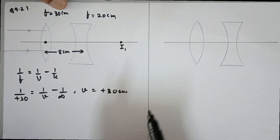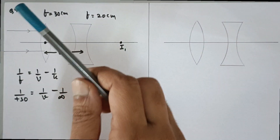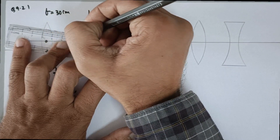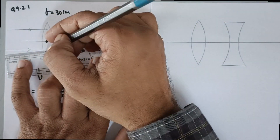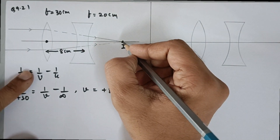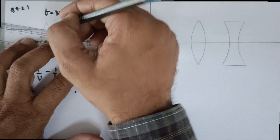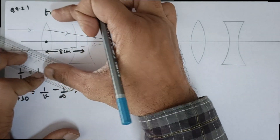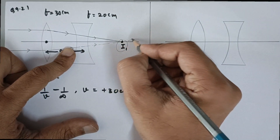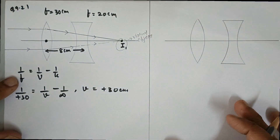This is the first image I1. This image is now going to behave as the object for the concave lens. We should understand that this is not a real object because the rays are converging towards this lens — so the object is going to be a virtual object. If you don't understand what virtual objects are, the link is in the description; please watch that video.